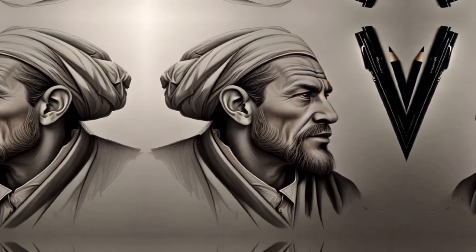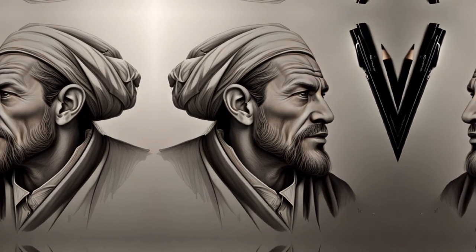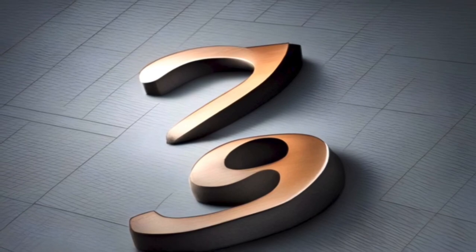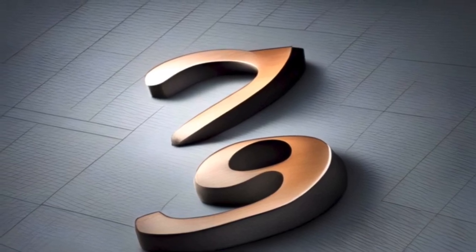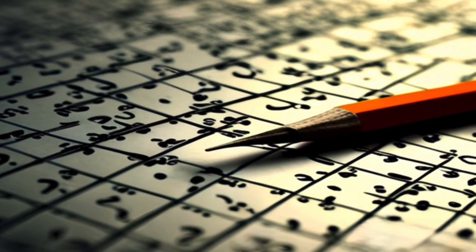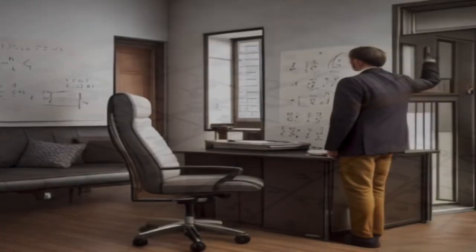In his work, Al Khwarezmi introduced mathematical symbols such as numbers and letters as representations of numbers and variables. The use of these symbols simplifies the mathematical manipulation process and provides a foundation for the development of modern algebra.